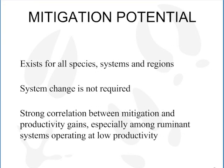To summarize: the mitigation potential exists for all species, all systems, and all regions, and it does not require a change of system — it's not about applying practices from one region to another. There is a strong correlation between mitigation and productivity gains, especially among ruminant systems that operate at low productivity, meaning there is considerable room for improvement through productivity improvement.